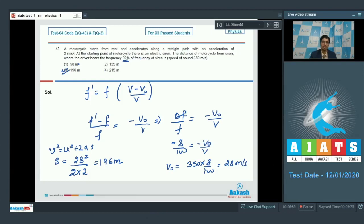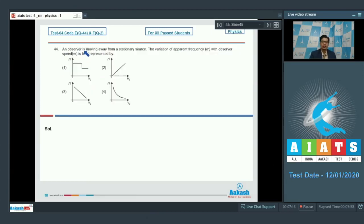Now, let us solve equation number 44. The question says the observer is moving away from a stationary source. The variation of apparent frequency with observer speed v0 is best described by. Dear students, the apparent frequency can be written as f into v minus v0 by v.